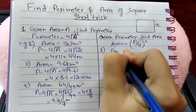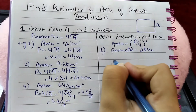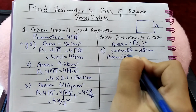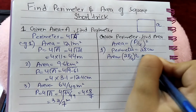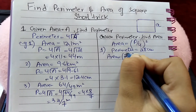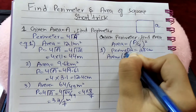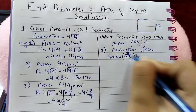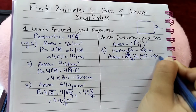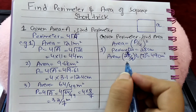Taking an example: if perimeter is given as 28 centimeters, area will be (28 divided by 4) whole squared, which equals 7 squared, equal to 49 centimeter square. So 49 centimeter square is the area of a square having perimeter 28 centimeters.